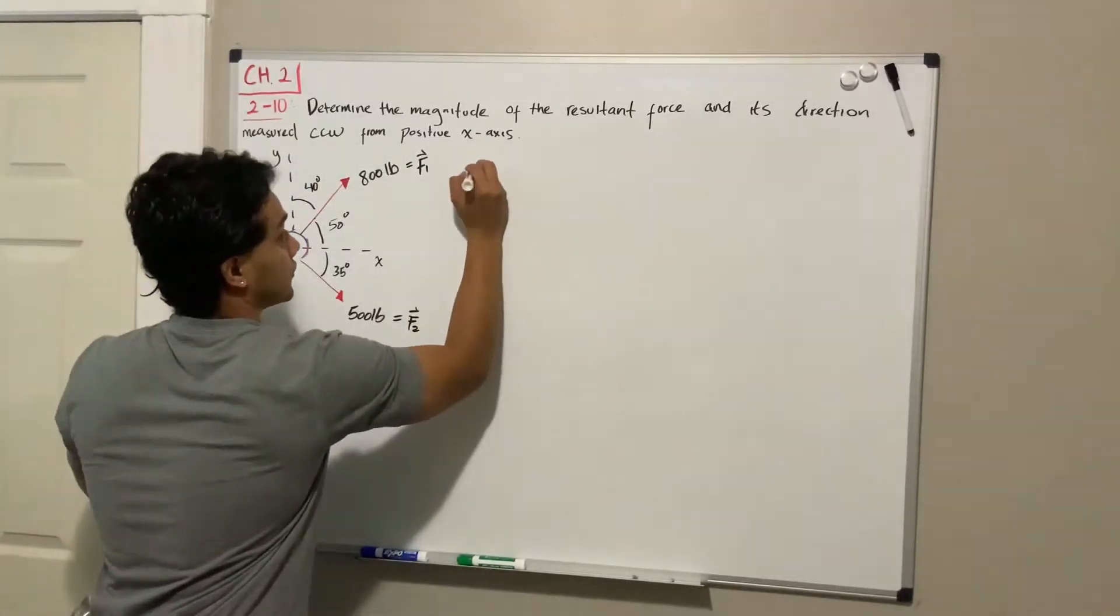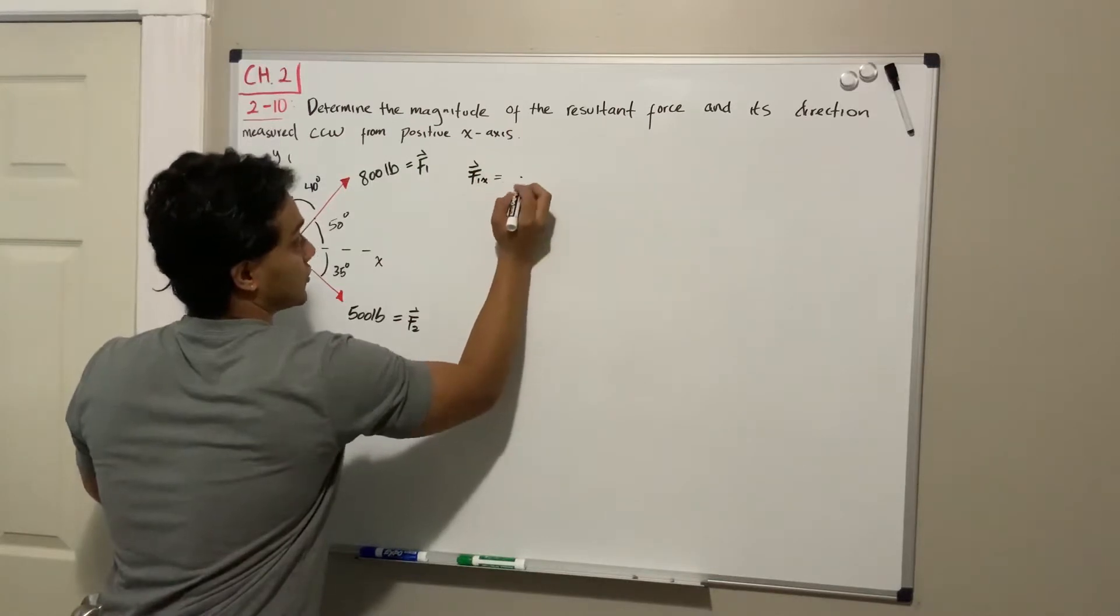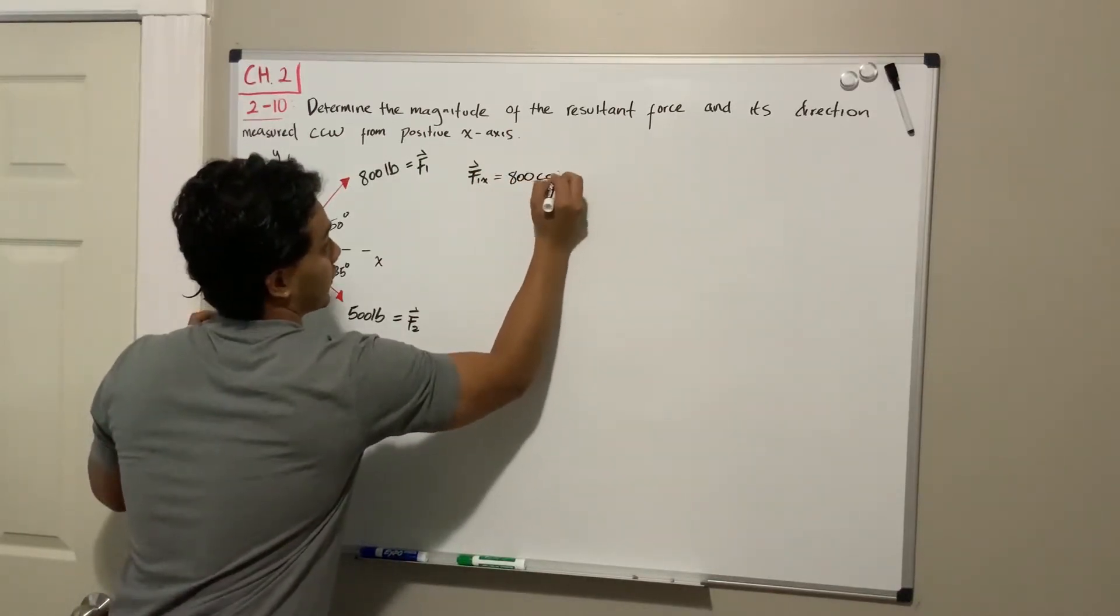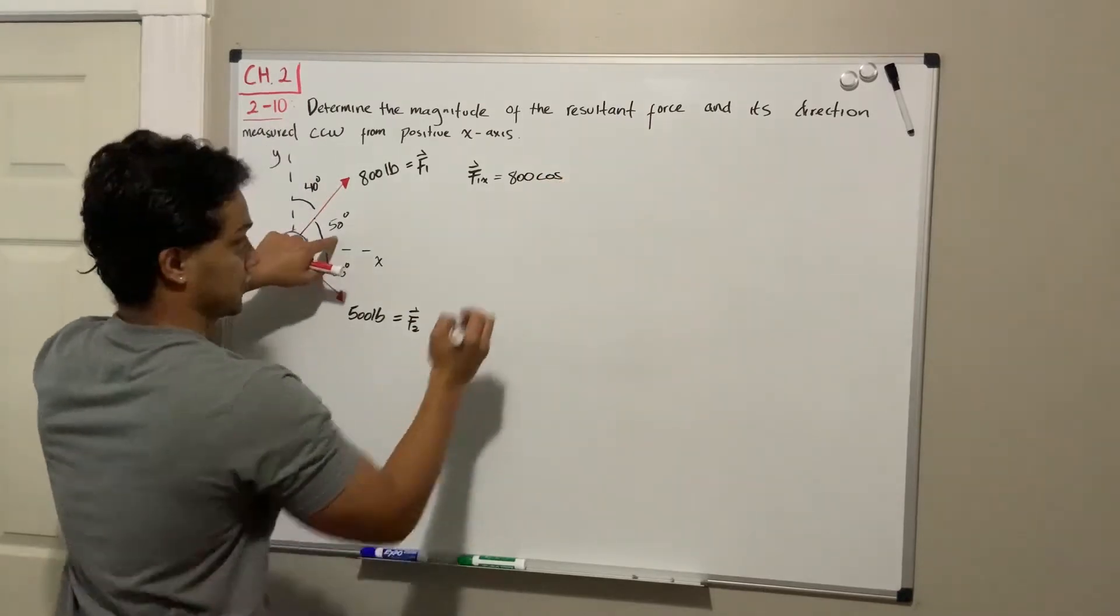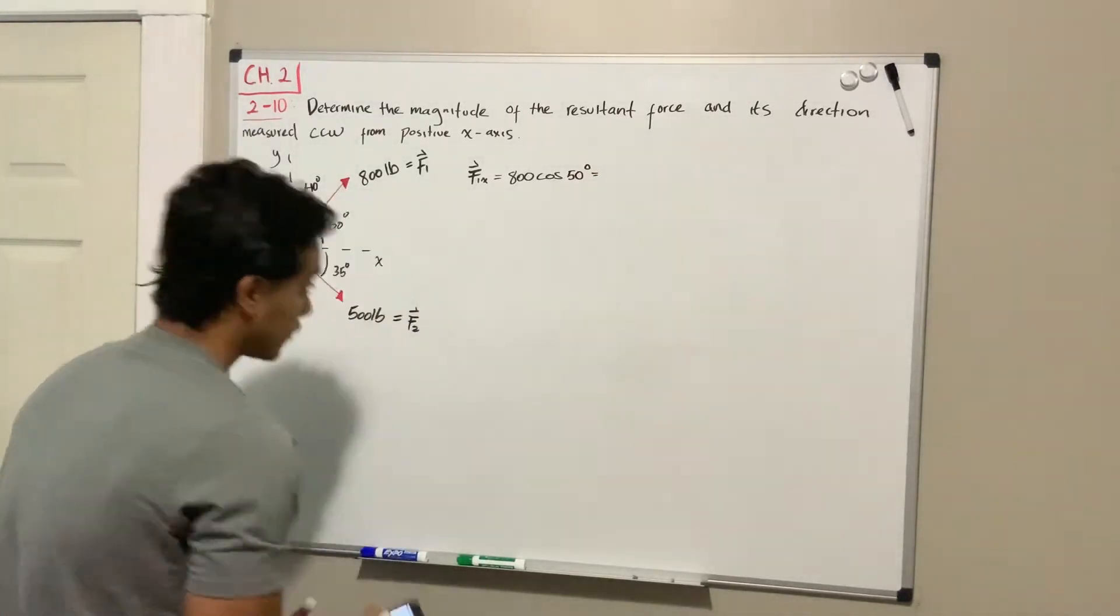If we start with F1 in the x direction, it's going to be equal to the 800 pounds multiplied by the cosine of its angle which is 50 degrees. Using the calculator, 800 cosine of 50, and that will give us 514.23 pounds.